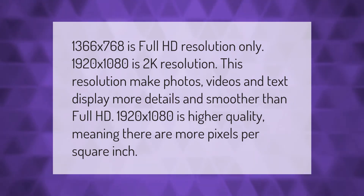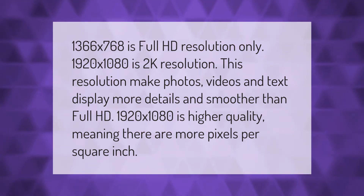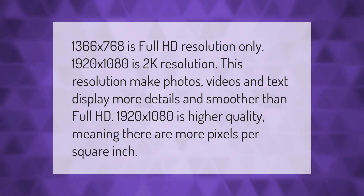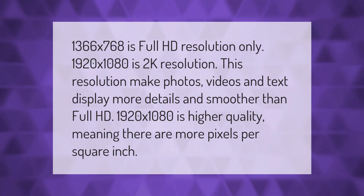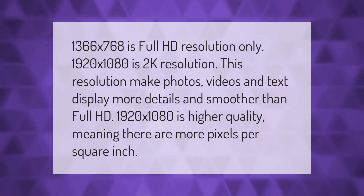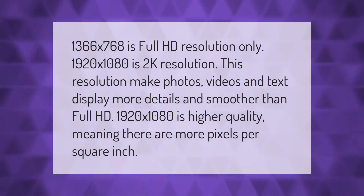1366 by 768 is full HD resolution — only 1920 by 1080 is 2K resolution. This resolution makes photos, videos, and text display more details and smoother than full HD. 1920 by 1080 is higher quality, meaning there are more pixels per square inch.